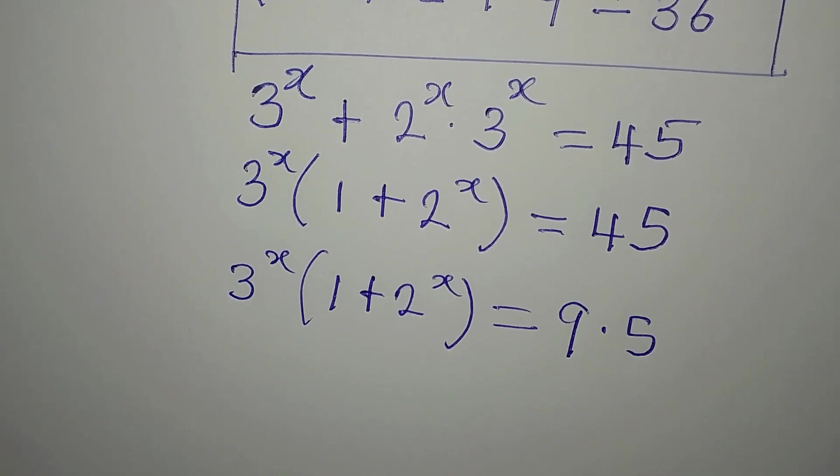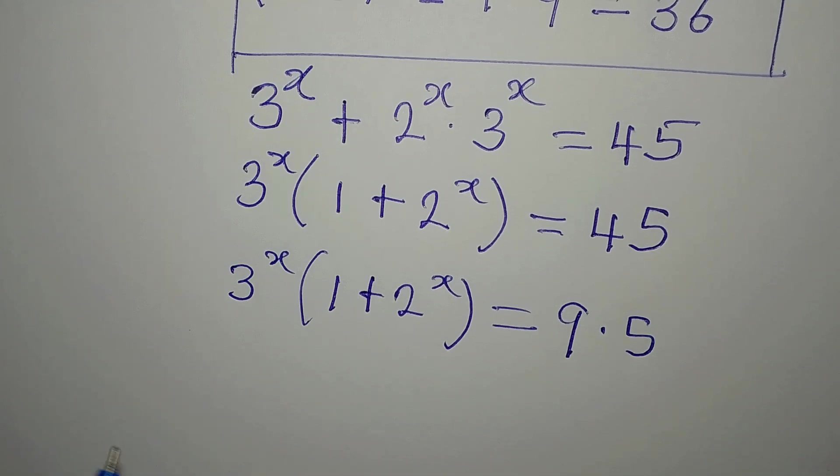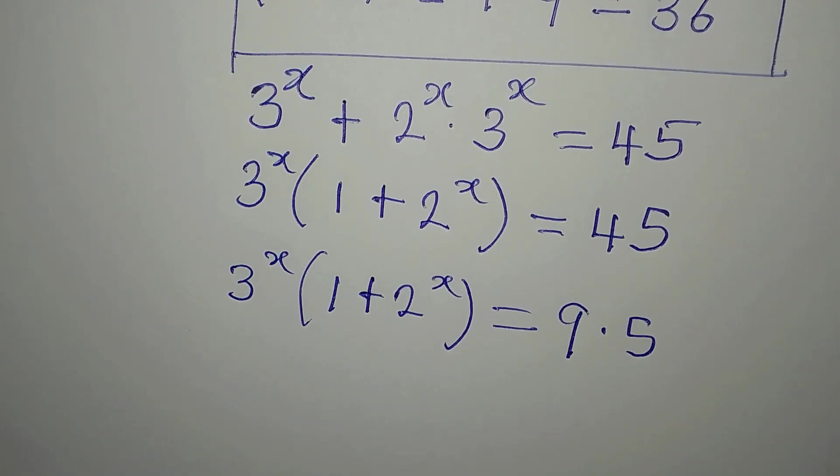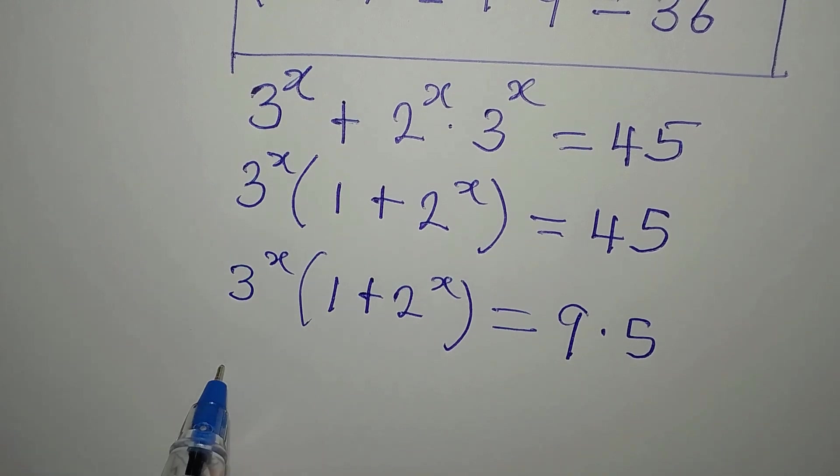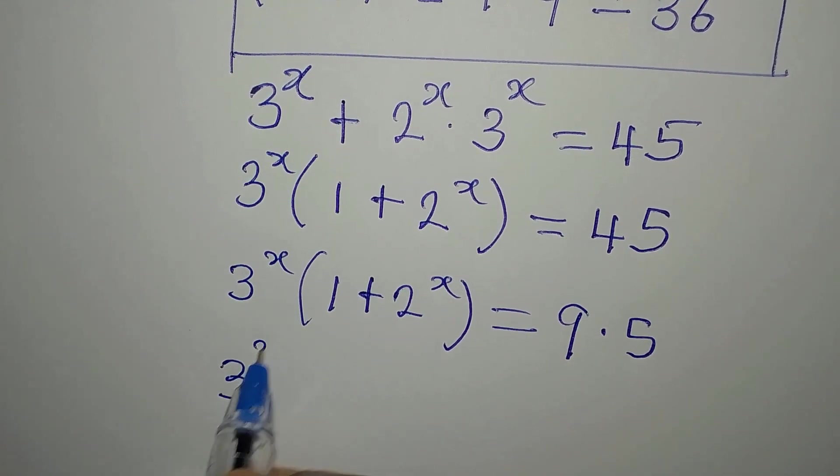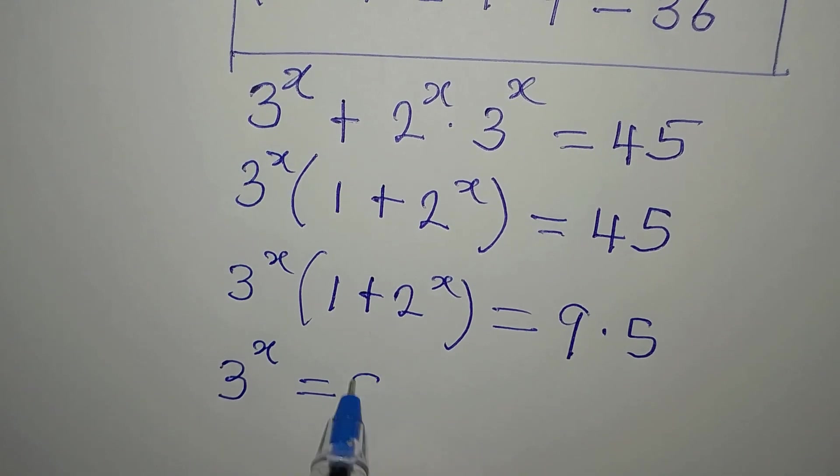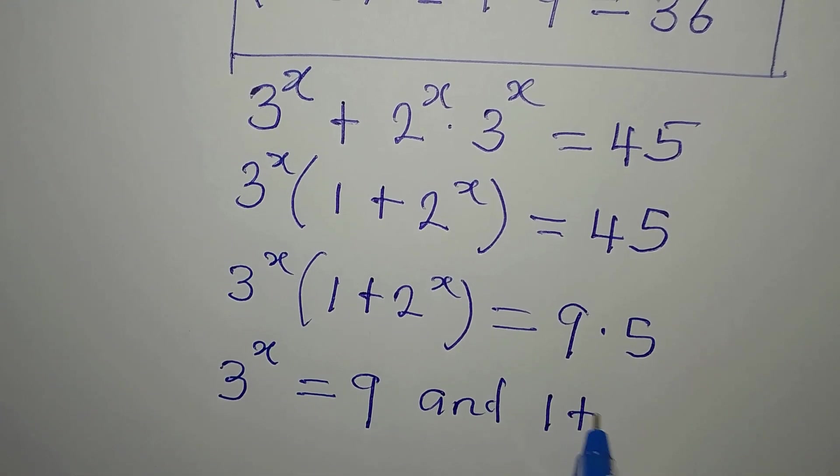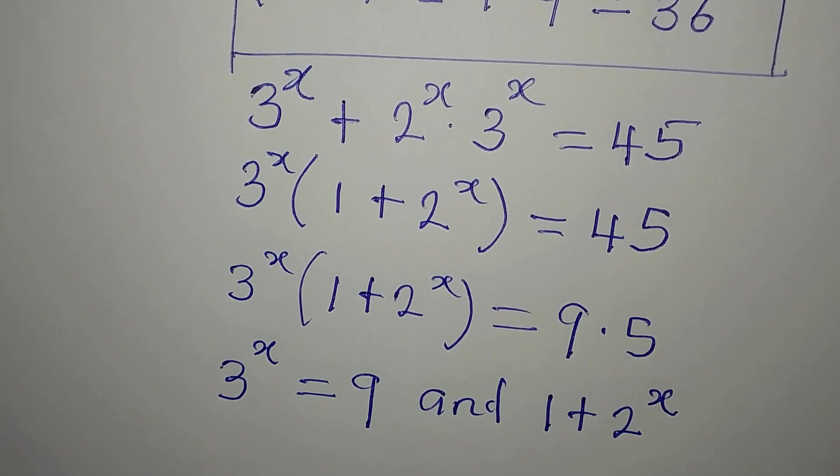Okay, so from here now, let's try to compare. We can express 9 in the base of 3, so that is going to be possible. So we are going to say that let 3 to the power of x be equal to 9, and 1 plus 2 to the power of x be equal to 5.